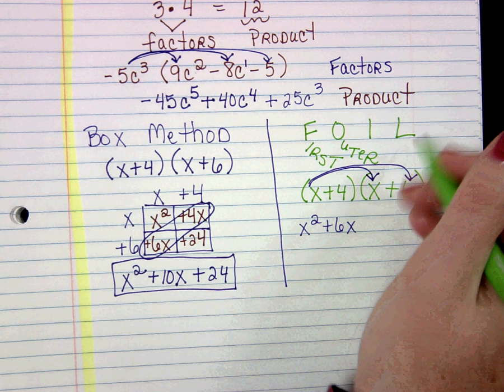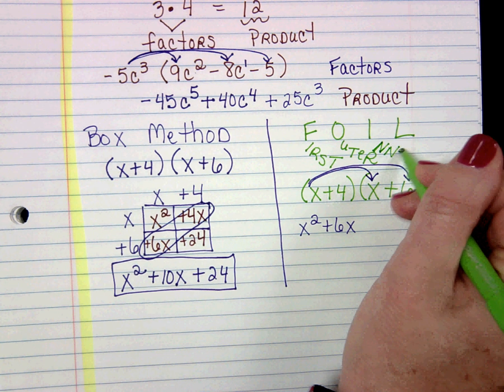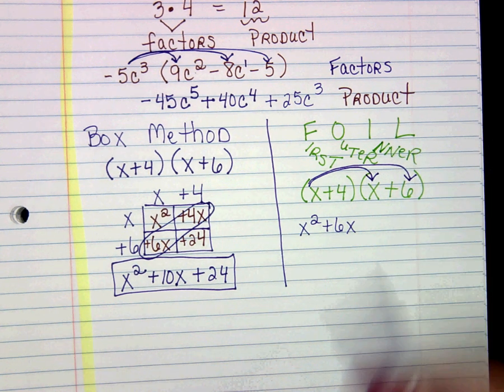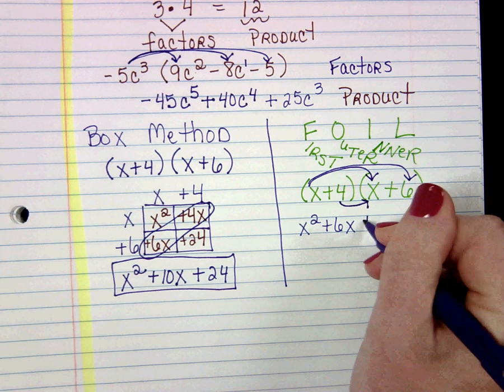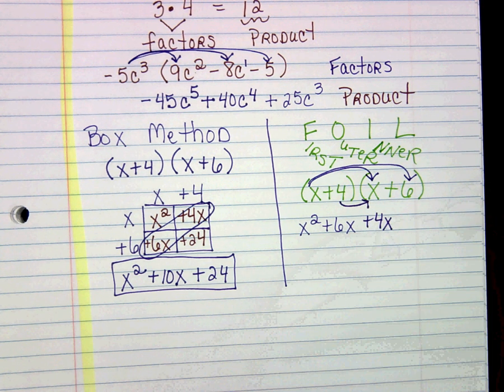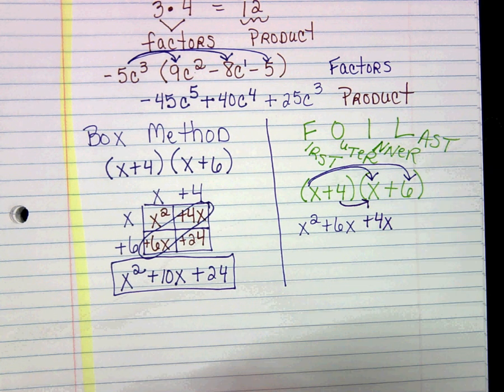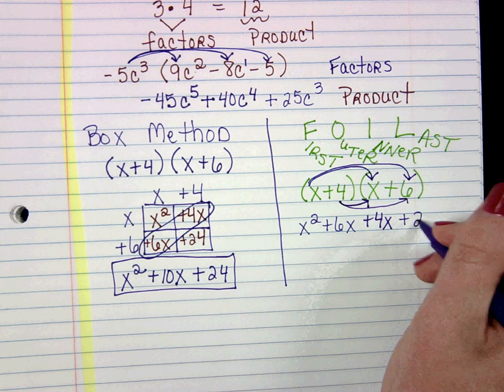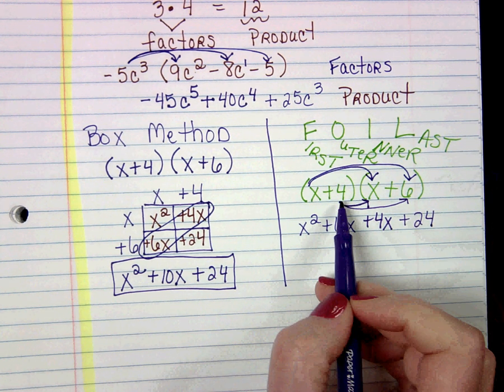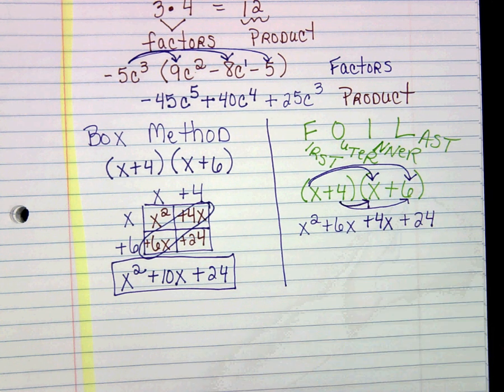The I stands for inner terms. Now I'm going to multiply the two inner terms which would be 4 and the x, so 4 times x is 4x. Then the L stands for last. We're going to take the 4 and the 6 and multiply 4 times 6 which is 24. We took the 4 and multiplied it by both terms in the second parenthesis.